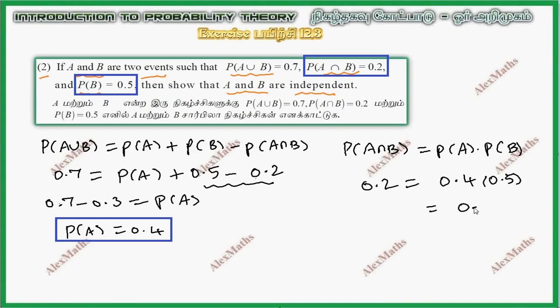This is equal to 0.2 and 0.2. So we can show that A and B are independent. Therefore, A and B are independent.